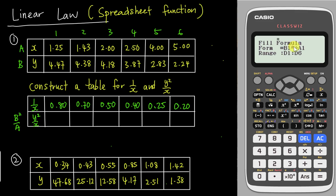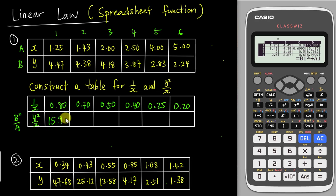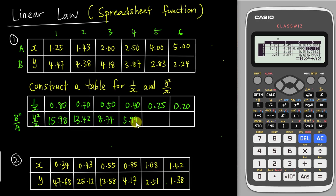Because you entered B squared directly, the calculator needs you to specify which data row to use — so choose B1 and A1, then tap Enter. The results to two decimal places are: 15.98, 13.42, 8.74, then 6.00 (or 5.99 due to rounding), and the last two are 2.00 and 1.00.